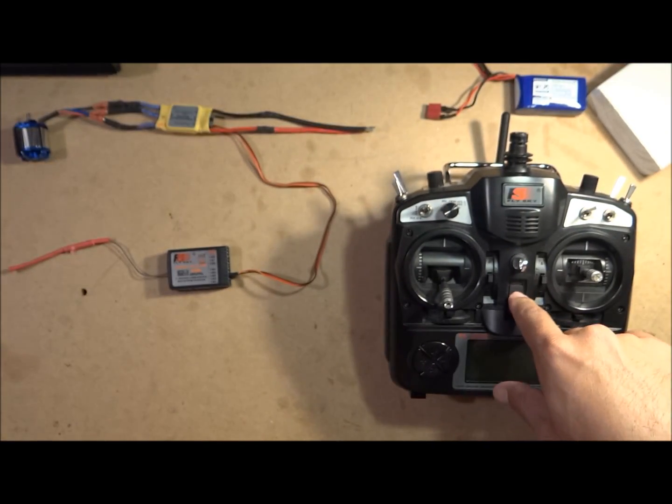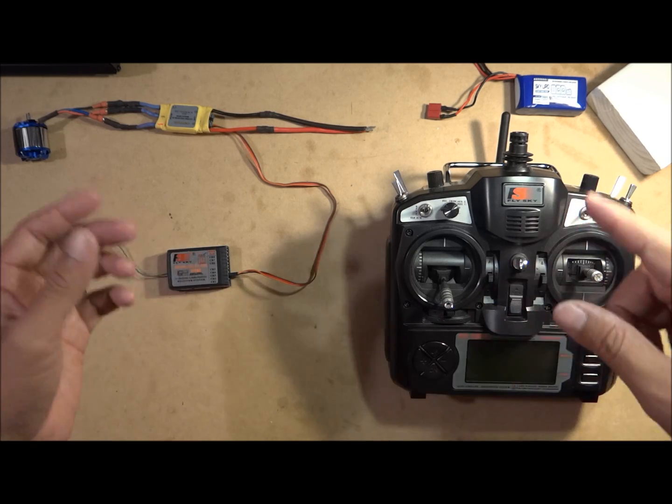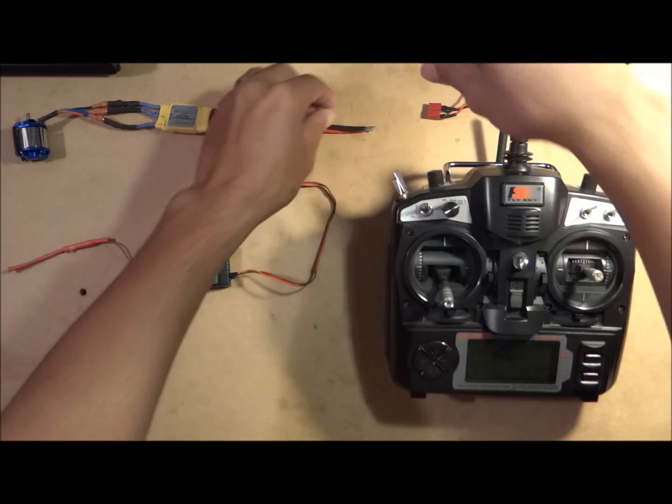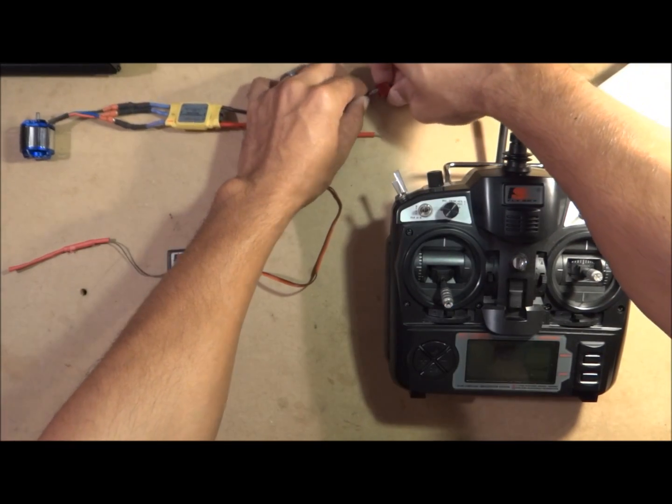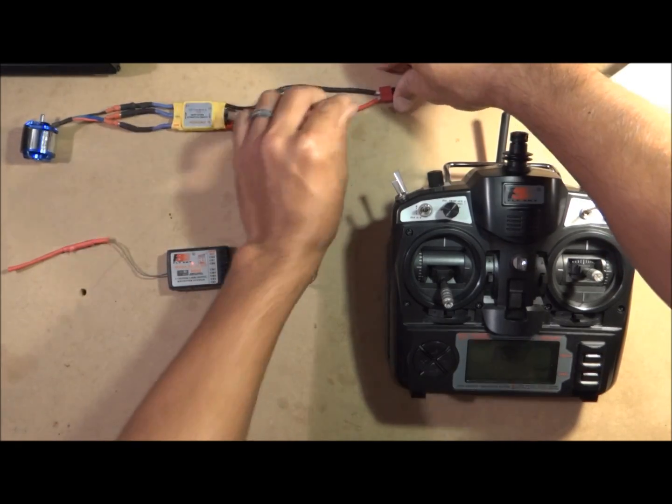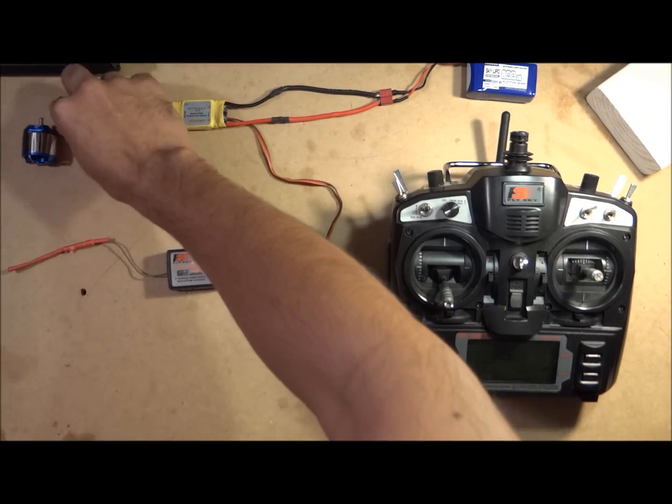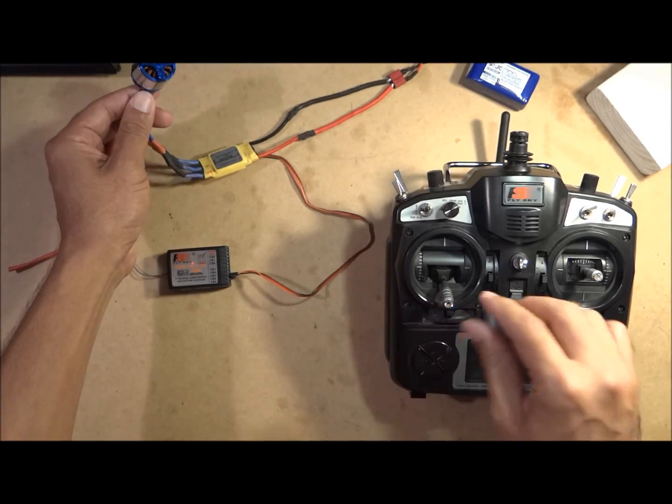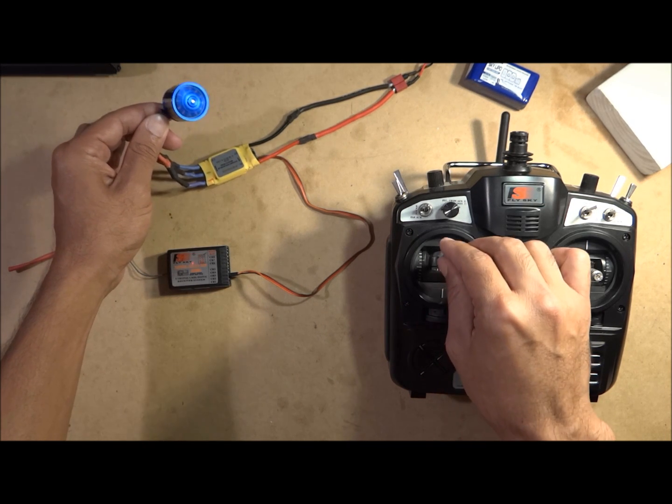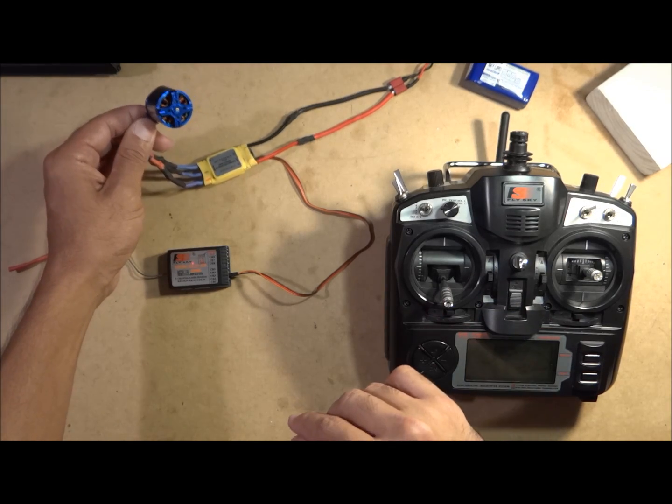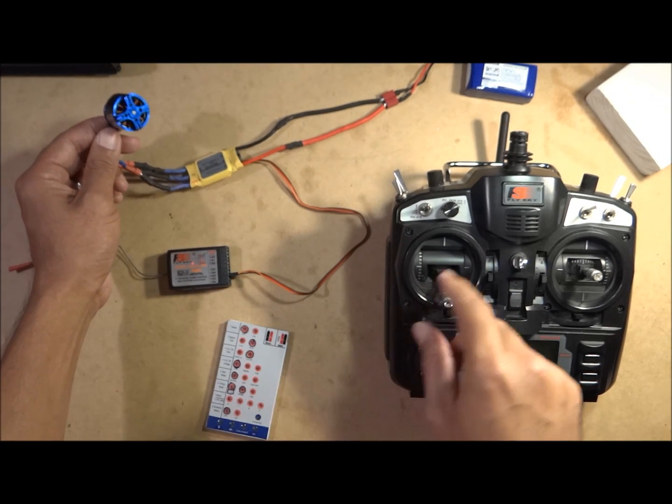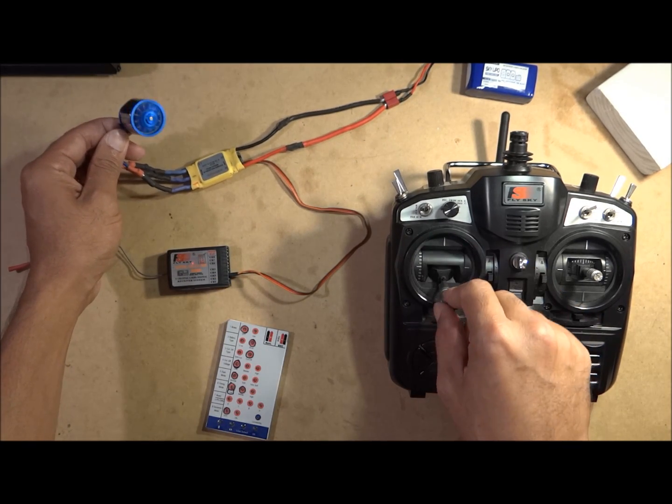And then shut off your transmitter. And then to test that out, power your transmitter back on, plug your ESC, then give it a spin. And that's how you calibrate your ESC for multirotors with a programming card and set your throttle range, calibrate your throttle. Pretty easy.